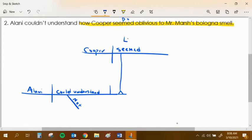And 'seemed' is a linking verb. So Cooper seemed, and I'm going to link to either a noun or an adjective, and he seemed the adjective 'oblivious.' So he seemed oblivious to smell. He's oblivious to smell.